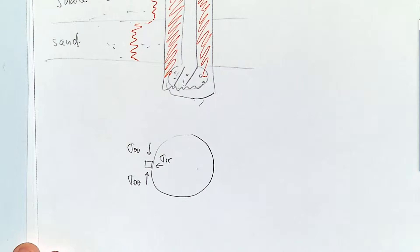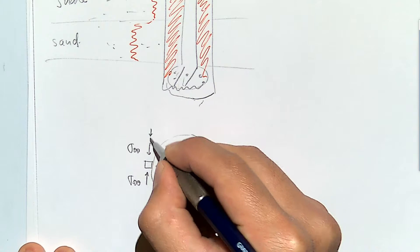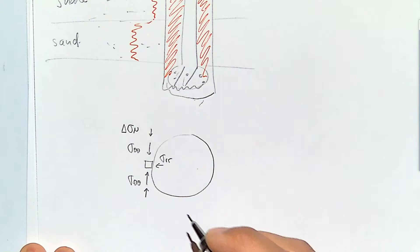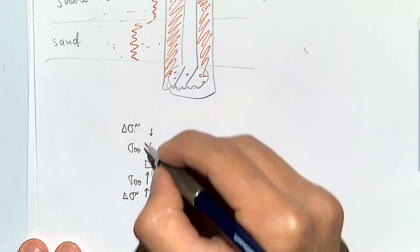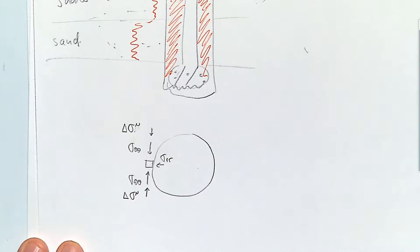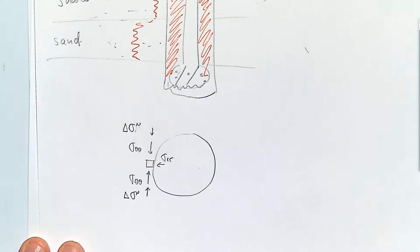In addition to the existing hoop stress, we're going to have an additional hoop stress caused by the change in salinity and the change in chemical potential — and that's going to increase the hoop stress. If that hoop stress goes beyond the shear strength of the rock, then you're going to have a breakout. We'll get to that later.